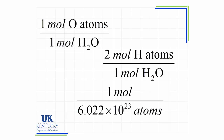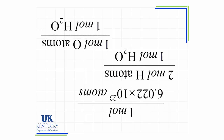Just like with our other conversion factors and relationships, these don't always have to be used in the exact same way. Depending on the information we're given and the information we're trying to find, we can invert these values to get to the units we need for our answer. It's perfectly okay to say that one mole of water contains one mole of oxygen atoms, just as we said one mole of oxygen atoms is in one mole of water. Any relationship that we set up as a fraction, we can invert that as long as we keep the right numbers and units together.